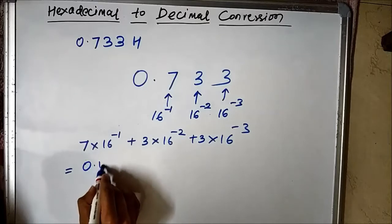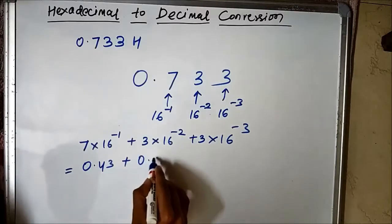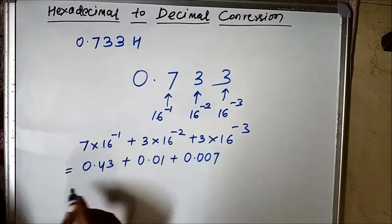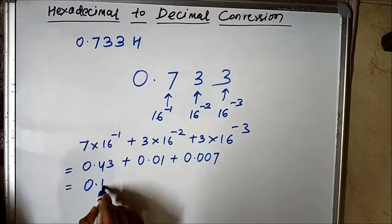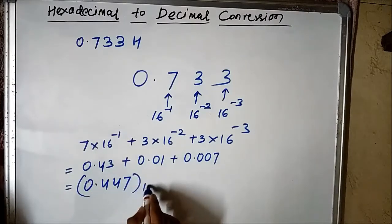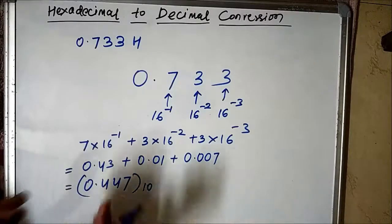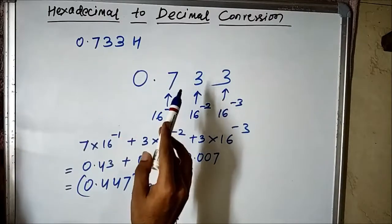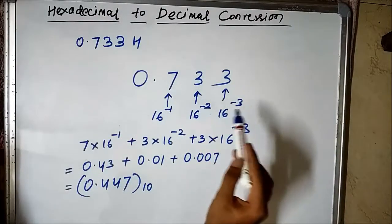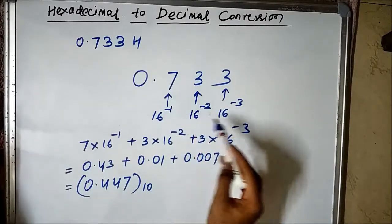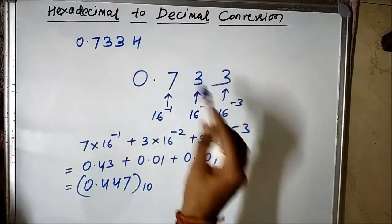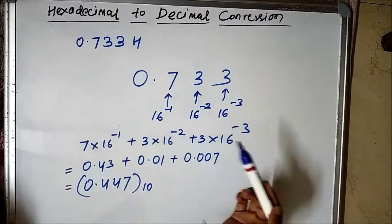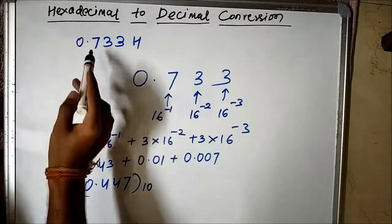That equals approximately 0.4375 + 0.0117 + 0.0007, which is about 0.447 in decimal form. To the right of the hexadecimal point, the powers have negative values — minus 1, minus 2, minus 3 — with respect to the base 16. We multiply the digits with the respective weight values and add the results to get the decimal equivalent of the fractional hexadecimal number.